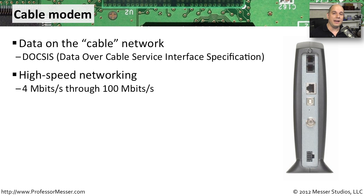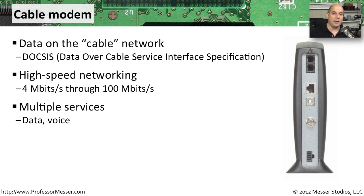One great advantage of data over cable is that because we have a cable in the ground, we can get very reliable high speeds. You'll often find cable modem options ranging from about 4 megabits per second all the way up to 100 megabits per second, and newer specifications are pushing that even further. Cable providers have also realized that with data, you can do an amazing amount of things — not only provide internet connectivity, but also voice services using Voice over IP on that data path.